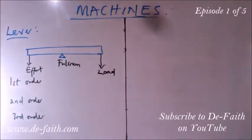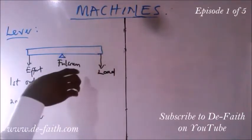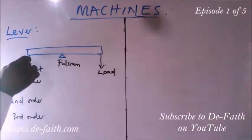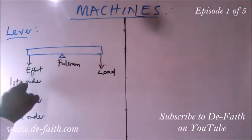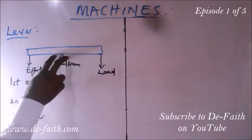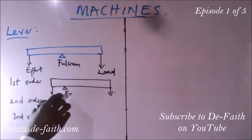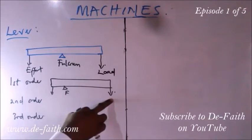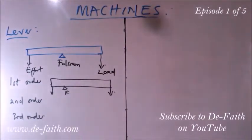In the first order lever, the fulcrum is in the middle. When a load is applied on one side, the body tends to move down, and effort is applied on the other side to lift the load up. The fulcrum can be adjusted — if moved towards the load side, less effort is needed to lift a heavy load. This is how mechanical advantage and higher efficiency are achieved. Examples of first order levers include the crowbar, the claw hammer, and the plier.